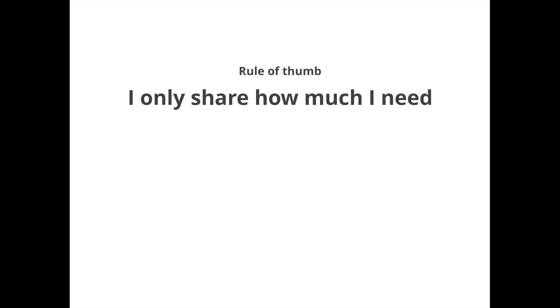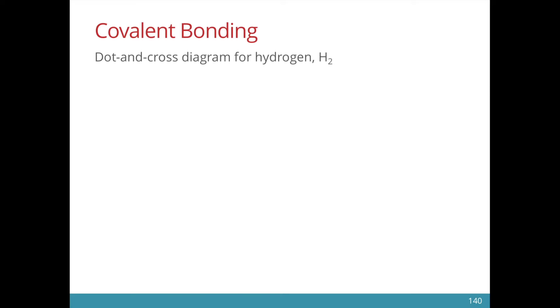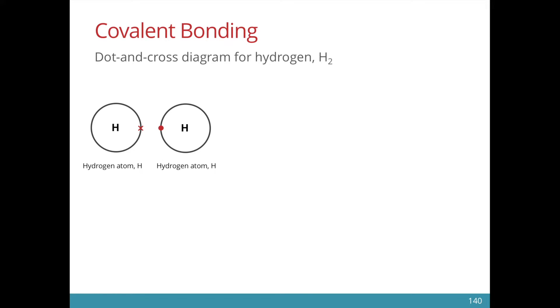A simple rule of thumb to determine how many electrons are shared is: I only share how much I need. Let's illustrate this with a simple example. Hydrogen has one valence electron. It needs one more to complete its valence shell. Remember, the first shell holds a maximum of only two electrons, so each hydrogen atom would share one electron.